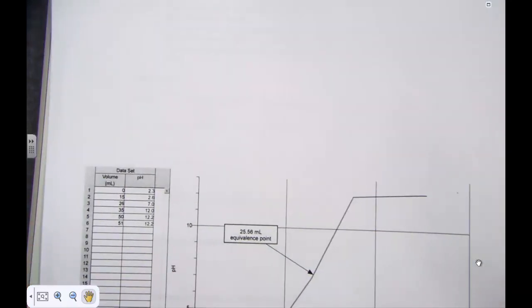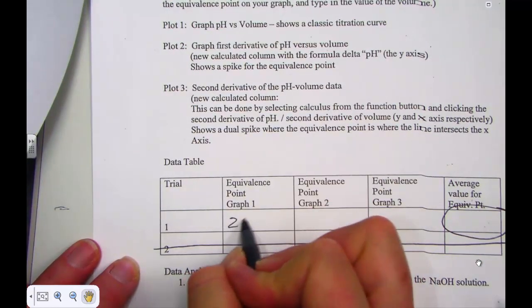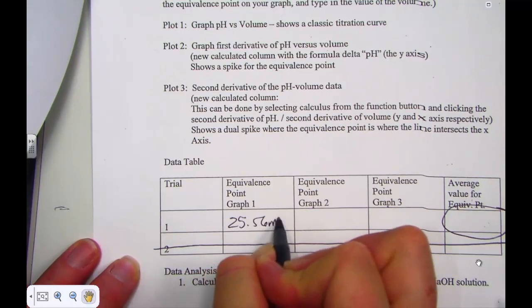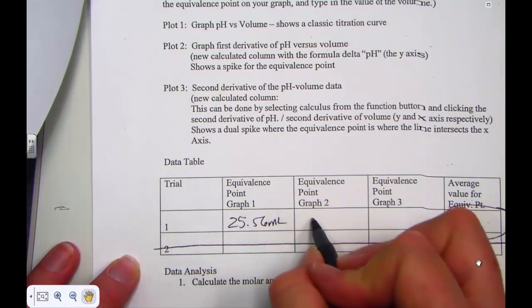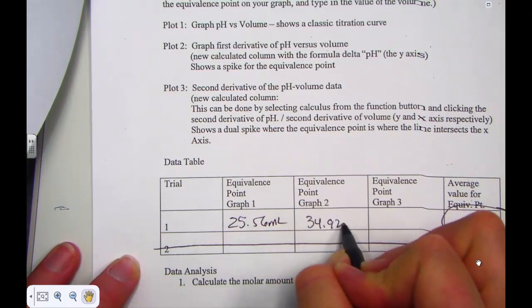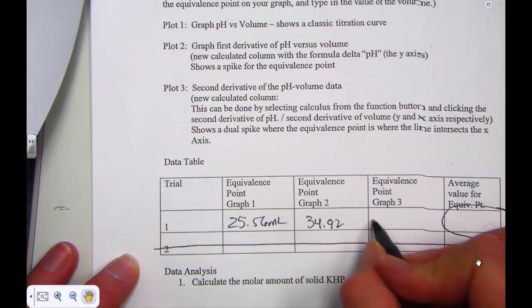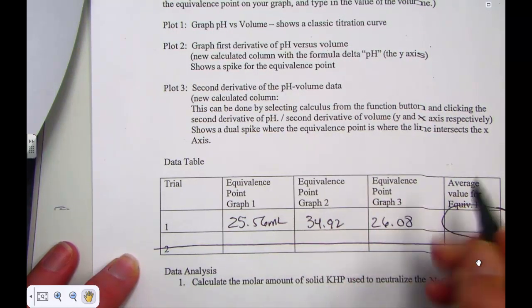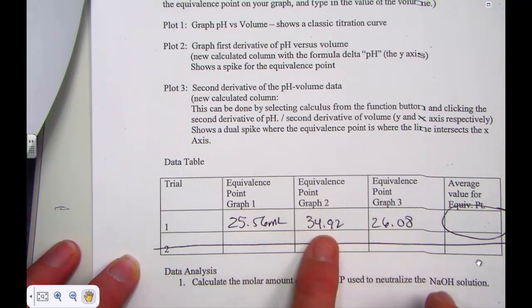From my graph, the classic curve, 25.56 mils, remember how we had labeled that? So 25.56 mils, just recording from our data table. In my first derivative, I had 34.92. That's by far an outlier. And in the third graph, I had 26.08 mils. So significantly, graph one and three agree, but I do have graph two.